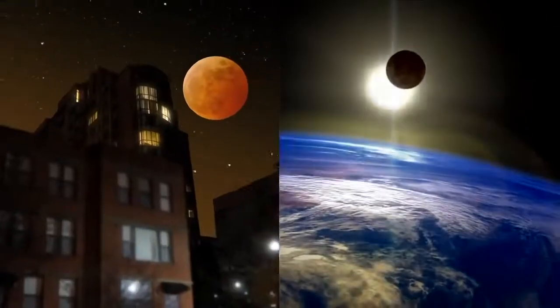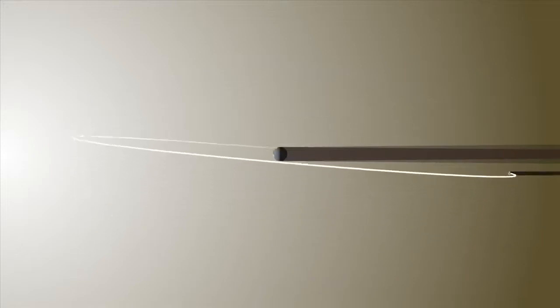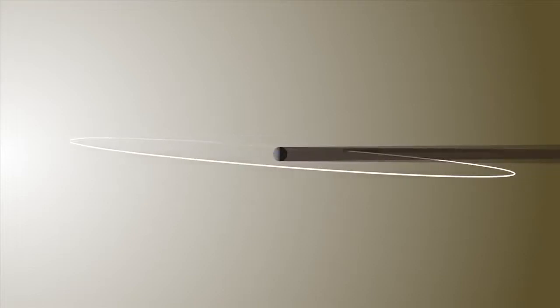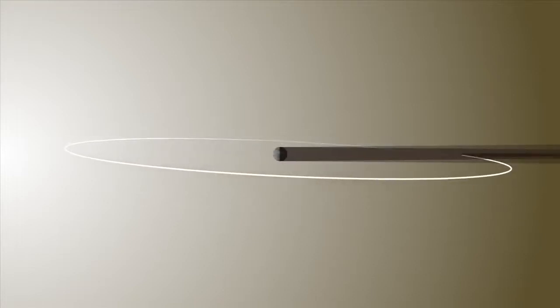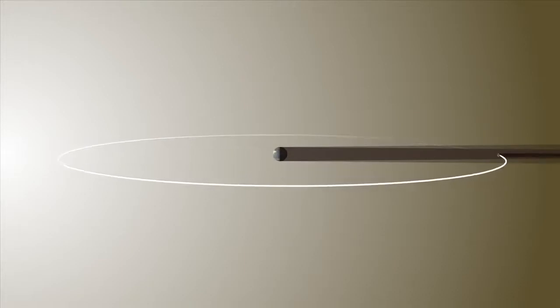But if that's the case, why do eclipses happen at all? Throughout the year, the moon's orbital tilt remains fixed with respect to the stars, meaning that it changes with respect to the sun. About twice a year, this puts the moon in just the right position to pass through the Earth's shadow, causing a lunar eclipse.